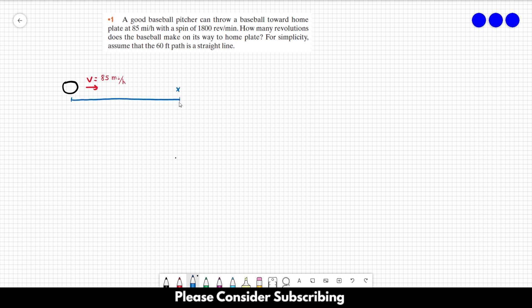So the distance between the ball and the home plate is equal to 60 feet. And we also know that the ball is spinning. So the ball is spinning and its angular velocity is equal to 1800 revolutions per minute. So this is the information that we have.